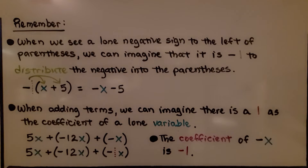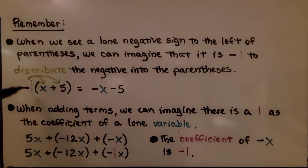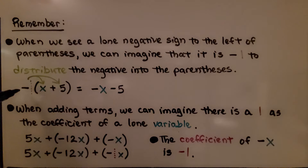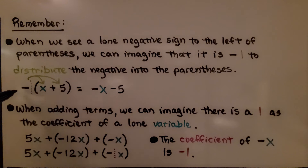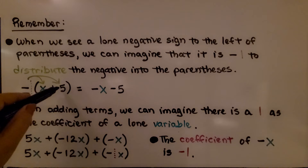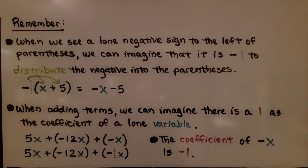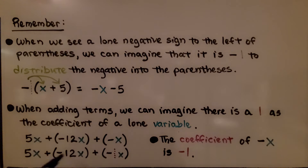Remember, when we see a lone negative sign to the left of parentheses, we can imagine it's negative 1. To distribute the negative into the parentheses, we have negative 1 times x — that's negative x — and negative 1 times positive 5 — that's negative 5. Also, when adding terms, we can imagine there's a 1 as the coefficient of a lone variable. So if we have 5x plus negative 12x plus negative x, we can think of it as adding negative 1x, where the coefficient of x is negative 1.